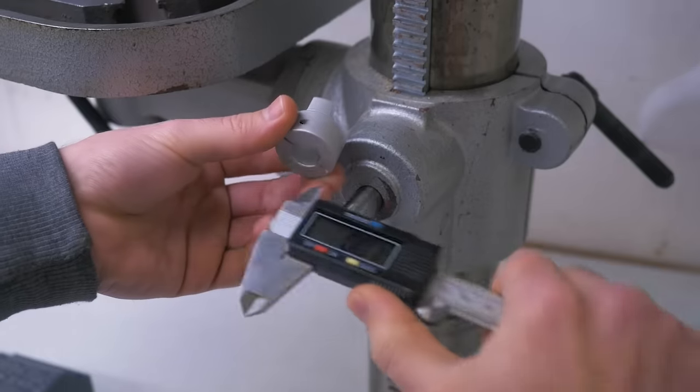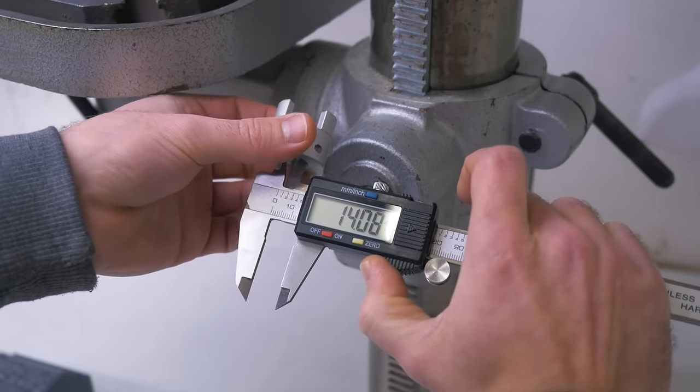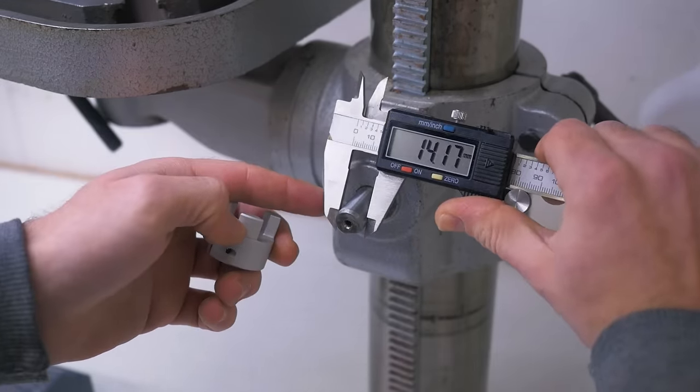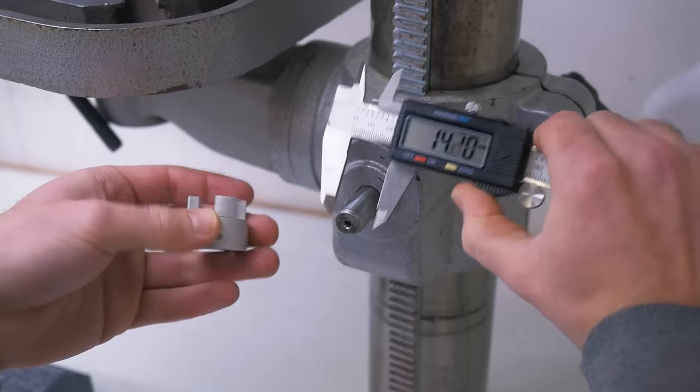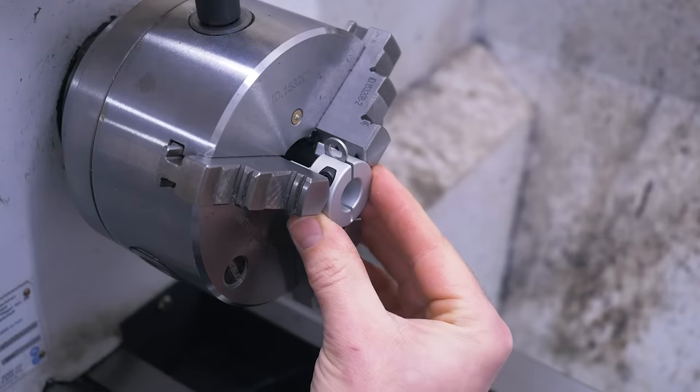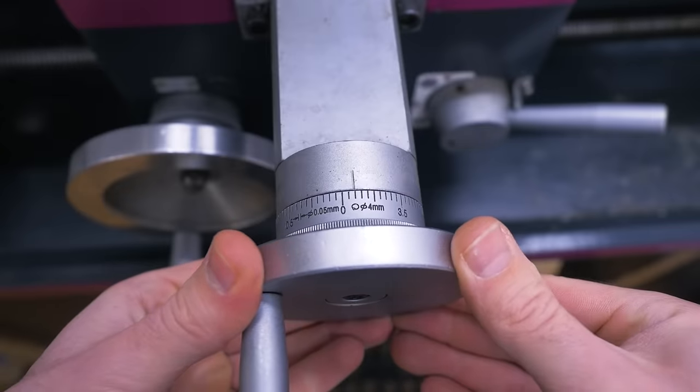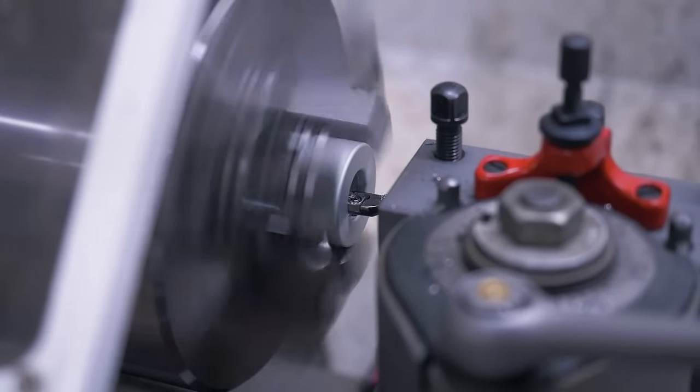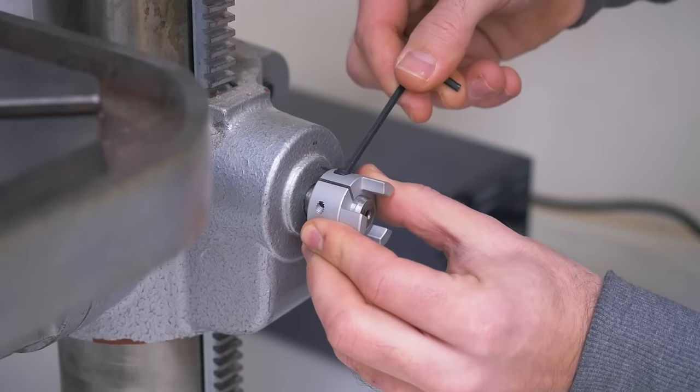The coupling already has a problem. The inner diameter is 14.0 something and the shaft is 14.1 something and it doesn't fit. I mounted it in the lathe and enlarged the hole by one tenth of a millimeter. That's a good fit now.